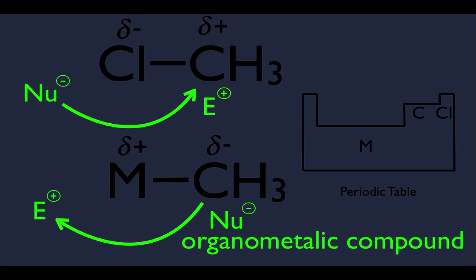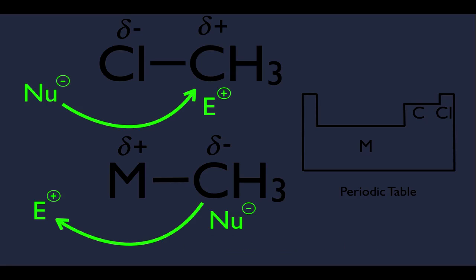Another thing mentioned at the beginning is that not only are organometallics nucleophilic, but usually if you're nucleophilic, you can also be very basic as well. These compounds can act as a base, meaning instead of attaching to an electrophile, if they're acting as a base they would be protonated — they would donate their electrons to an H+. So remember that they are nucleophilic and also basic.